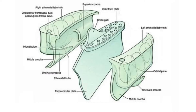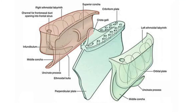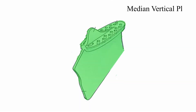The simple and easy way to understand the ethmoid bone is to divide it into two parts. One is the median vertical plate, and the other one is the left and right labyrinth. The median vertical plate includes the crista gallii, the cribriform plate, and the perpendicular plate. While the left and right labyrinth include the medial wall, the ethmoidal air sinuses, and the lateral wall. This is the median vertical plate, and as we discussed, it consists of three parts.